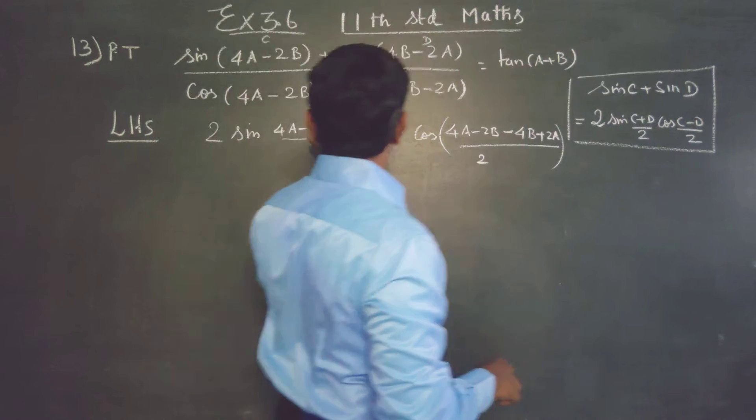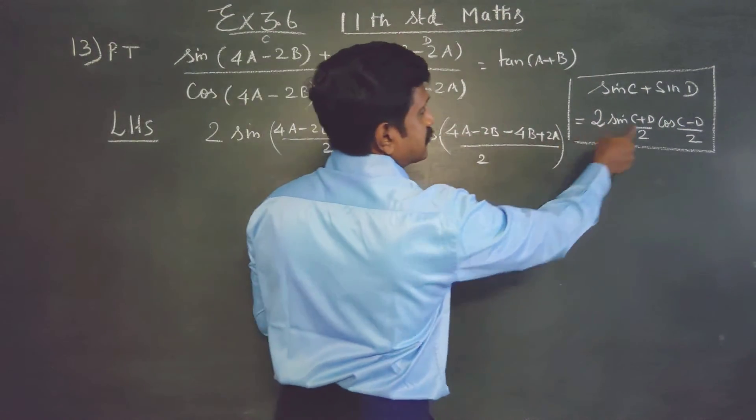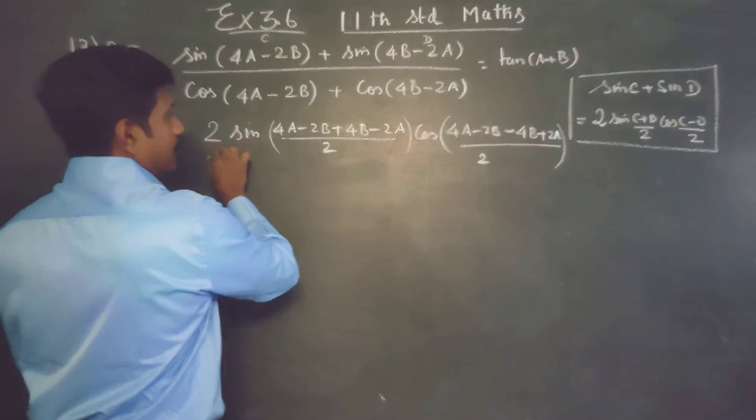2 sinc plus d by 2, c plus d by 2, c minus d by 2, all divided by.